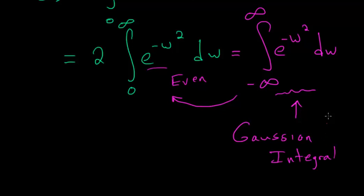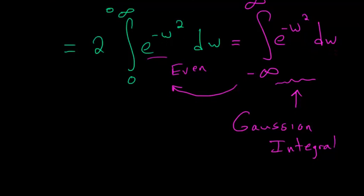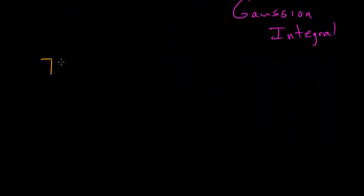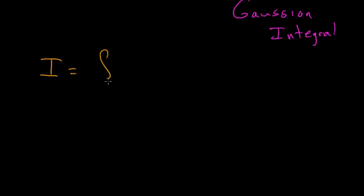And it comes up often in probability. And there's a nice trick we can use to actually evaluate an integral like this. So what I'll do is I'll redefine it, calling it i, the integral from minus infinity to infinity of e to minus w squared dw.